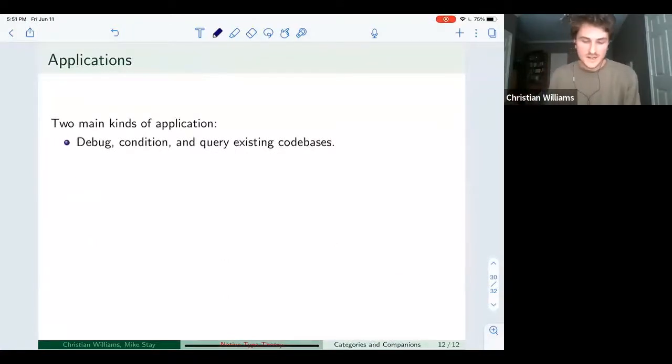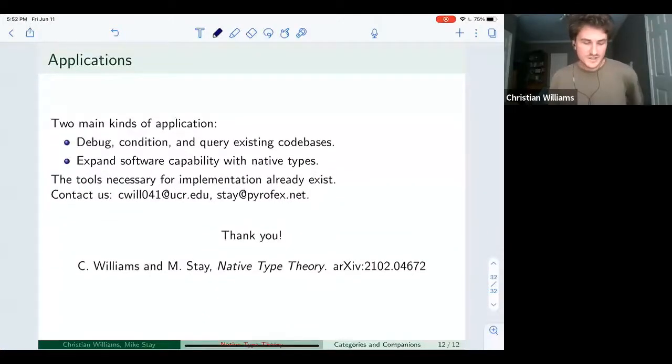So to be honest, Mike and I have not really mapped out the scope of the applications yet. We're not sure what the scope is, but it seems very broad. But there seem to be two main categories of applications. On the one hand, you can debug and condition and query existing code bases. But on the other hand, you can also think of a native type system as a richer programming language. And you can write new code that can significantly expand software capability. So we're excited about both of those applications and the fact that most of the tools necessary for implementation already exist. So if you're interested in this, please feel free to contact us. And you can find all the relevant references in the paper.